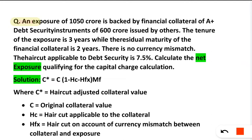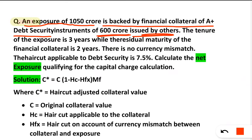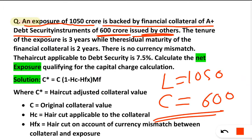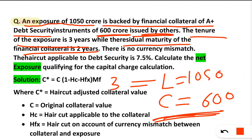Here we will discuss the haircut-based problem. An exposure of 1050 crore is backed by financial collateral of an A+ debt security instrument of 600 crore issued by others. So we have a loan of 1050 crore and collateral of 600 crore. The tenure of the exposure is three years and the residual maturity of the collateral is two years.